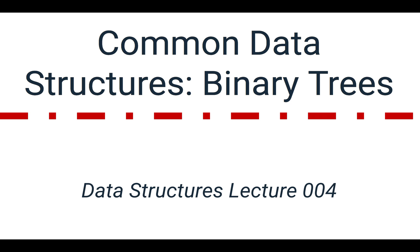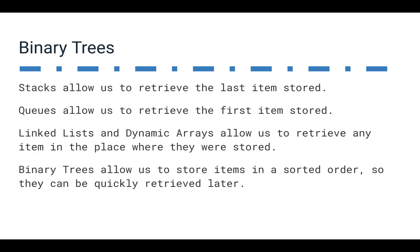Continuing our discussion about common data structures, in this lecture we're going to get into binary trees. As a quick review: stacks allow us to retrieve the last item stored — last in, first out. Queues allow us to retrieve the first item stored — first in, first out. With linked lists and dynamic arrays, they allow us to put things in any particular place and still find them there.